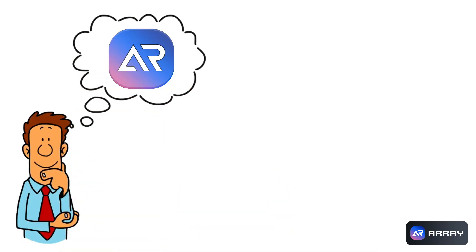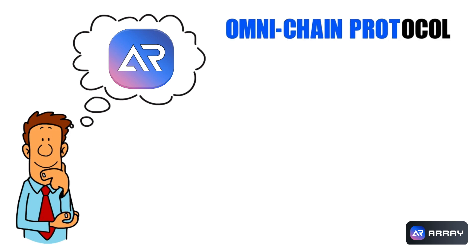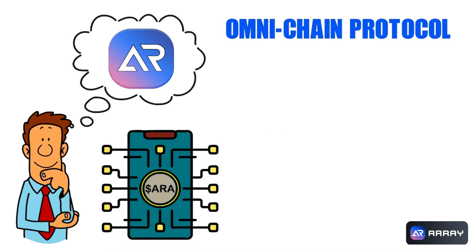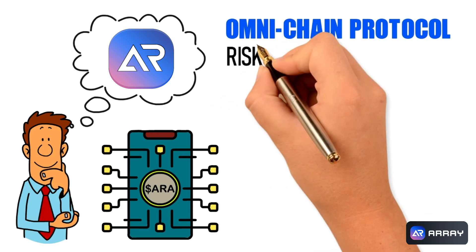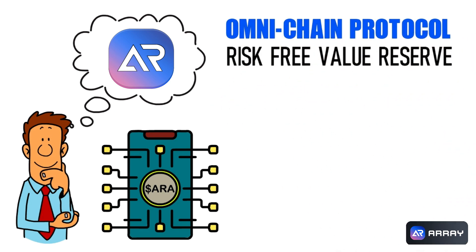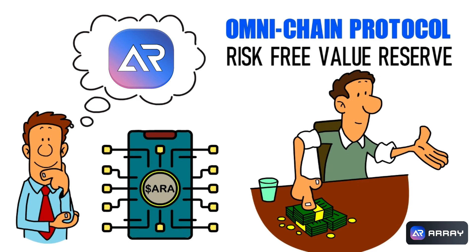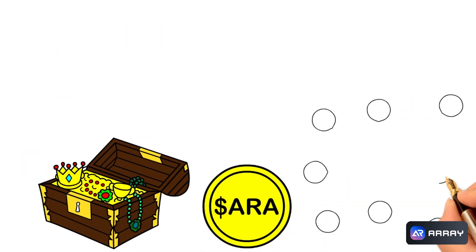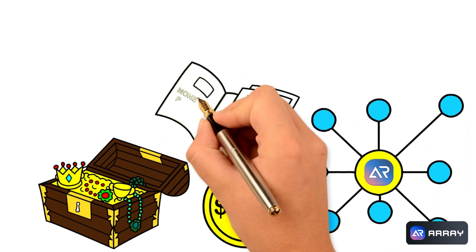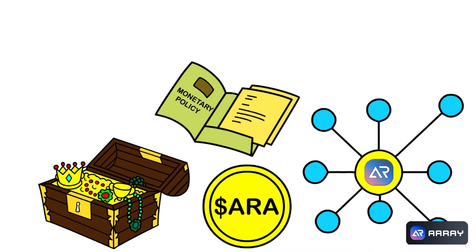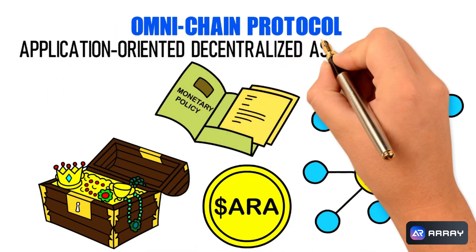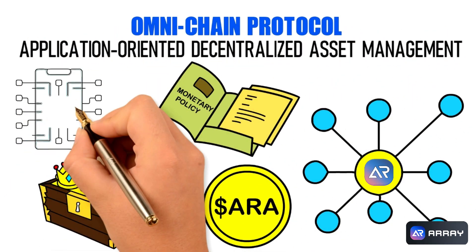Have you heard about Array, the omni-chain protocol and next generation algorithmic currency system? Array is changing the game by providing a risk-free value reserve and a new way of thinking about money. With the Array token Dollar ERA, you can invest in a treasury that is backed by the Array network and supported by its monetary policy.